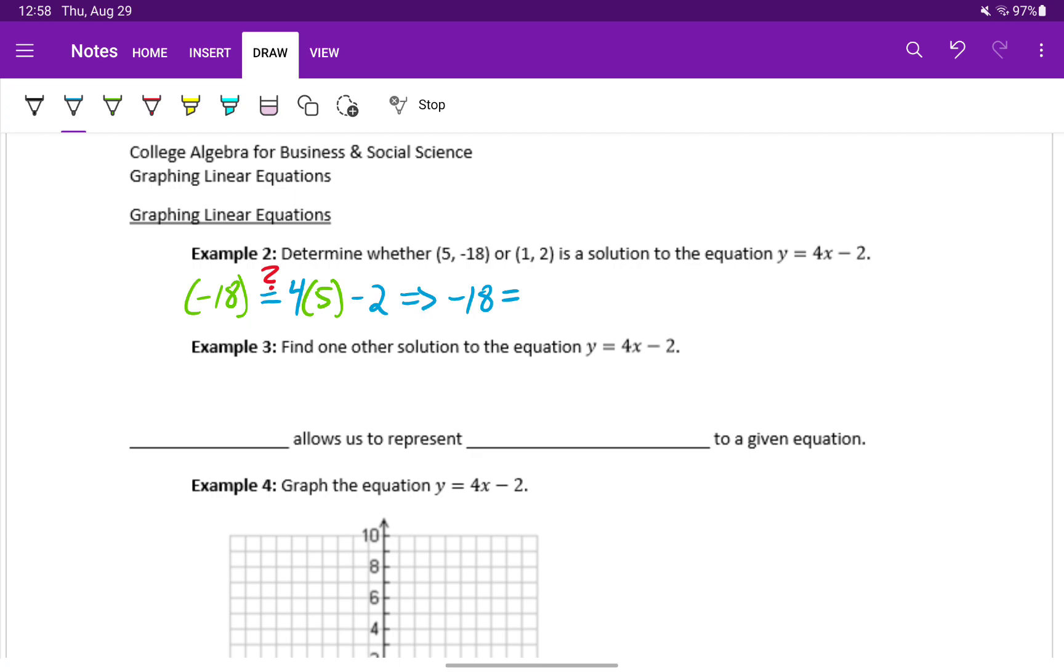And on the right-hand side, we would get 4 times 5, which is 20, minus 2, would give us positive 18. Those values aren't equal, meaning 5 comma negative 18 is not a solution to this equation.